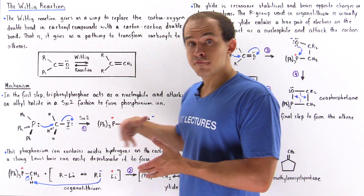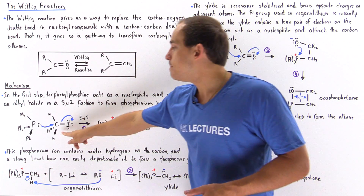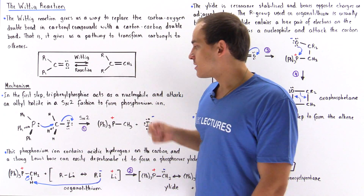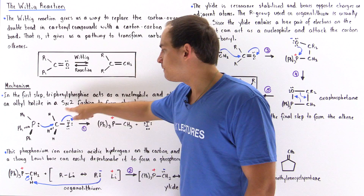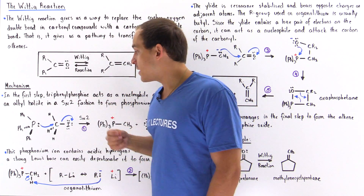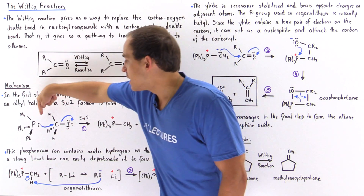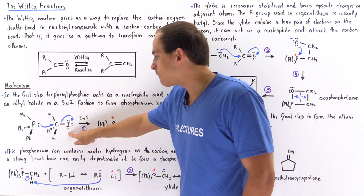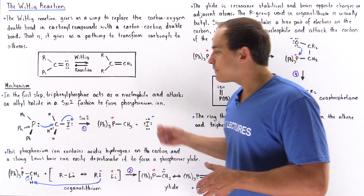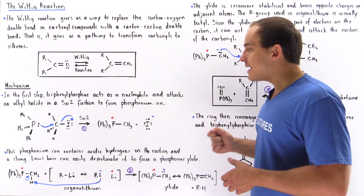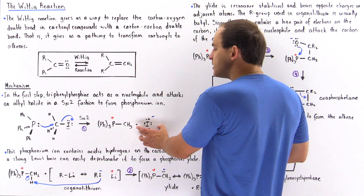In the first step of forming the elide, we take triphenylphosphine and react it with a methyl halide — in this case, methyl iodide. The methyl iodide contains a good leaving group, and because triphenylphosphine contains a phosphorus with a lone pair of electrons, it acts as a good nucleophile. In an SN2 fashion, the phosphorus forms a bond with the carbon, kicking off the iodide. This gives us the phosphonium ion and iodide.